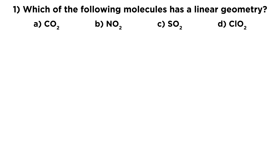Taking a look at the first question, we've got four molecules and we want to know which one has a linear geometry. Looking at the central atom in each example: carbon has four valence electrons, nitrogen has five, sulfur has six, and chlorine has seven. We're going to have to draw the Lewis dot structures in order to figure out what the geometries are.